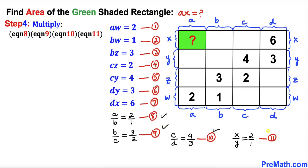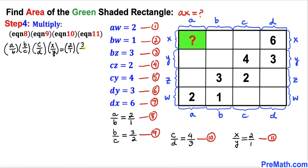Now let's multiply equations 8, 9, 10, and 11 together. On the left side: a/b times b/c times c/d times x/y. On the right side: 2/1 times 3/2 times 4/3 times 2/1. On the left, b and b cancel, c and c cancel. On the right, 2 and 2 cancel, 3 and 3 cancel. We end up with ax divided by dy equals 8.